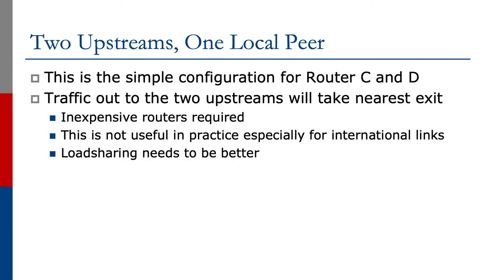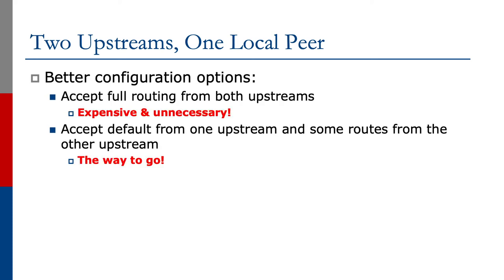It's a very simple configuration, though it's not very useful. It works, but traffic to the two upstreams will simply be nearest exit, as we've seen before. What we want to try to do now is make the load sharing much better. The better configuration options available: we could do full routing from both upstreams, which seems to be the favorite of many today. But the other way — and probably the better way — is to accept the default from one upstream and some routes from the other upstream. We're going to look at these two cases now to compare them so that you can make a choice.